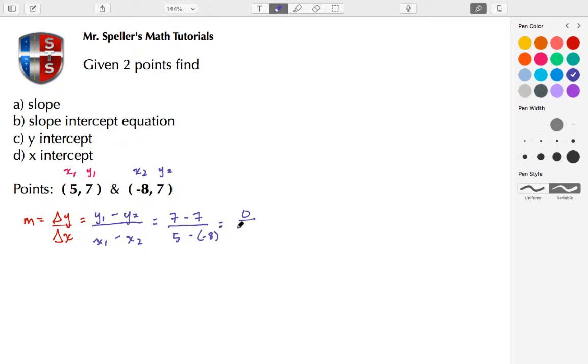I have 5 plus 8, because these two negatives make a positive, so 5 plus 8 to give me 13. So here my numerator is 0, which tells me that my slope is 0.